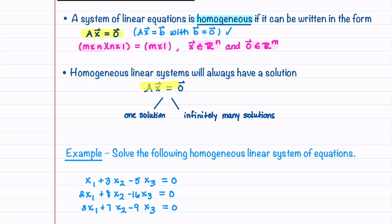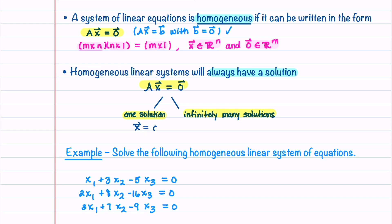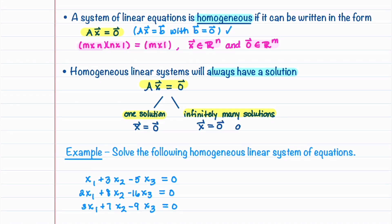Homogeneous linear systems will always have a solution — either one solution or infinitely many solutions. If it has one solution, the solution will be X equals zero. If it has infinitely many solutions, the solution will include X equals zero and infinitely many X not equal to zero.